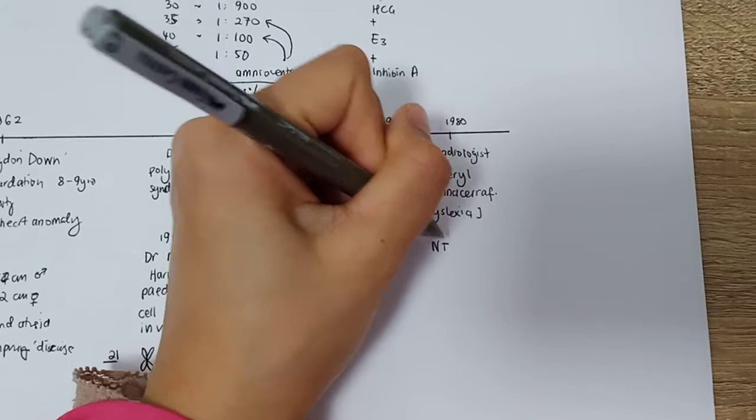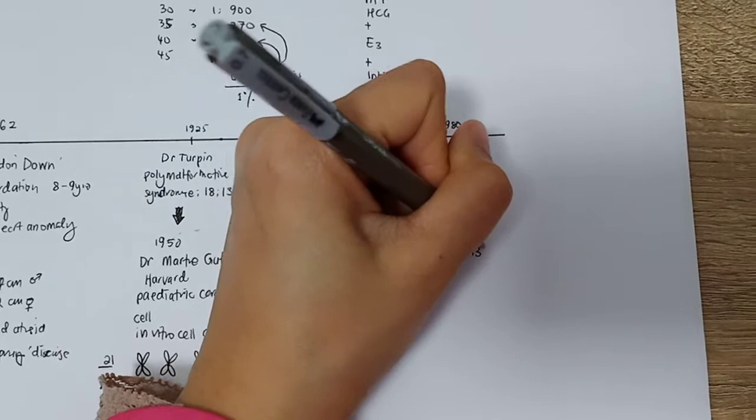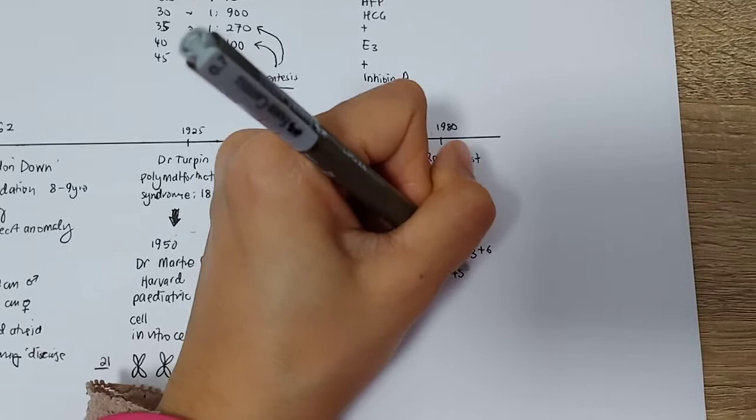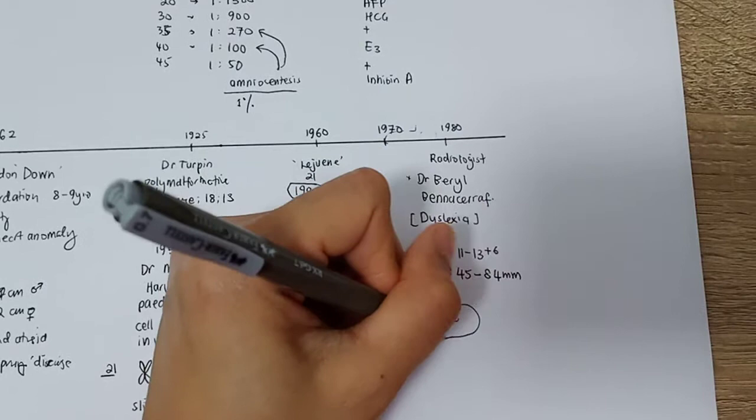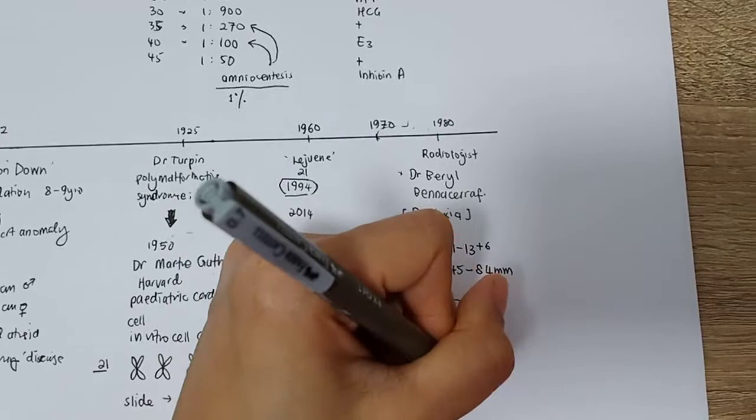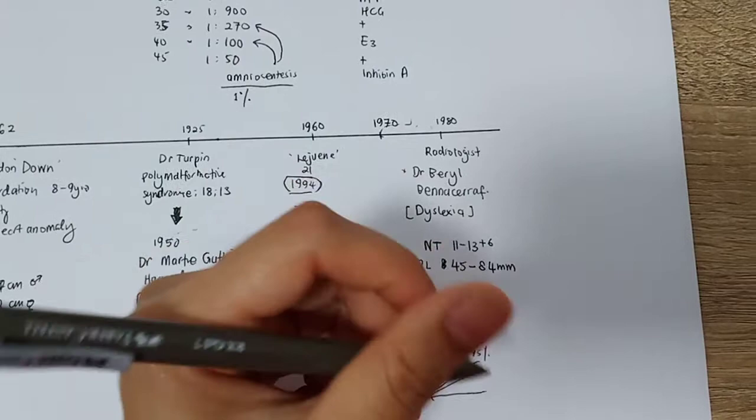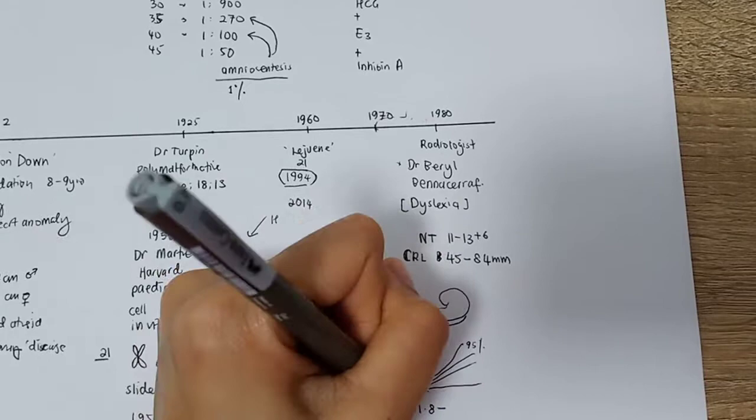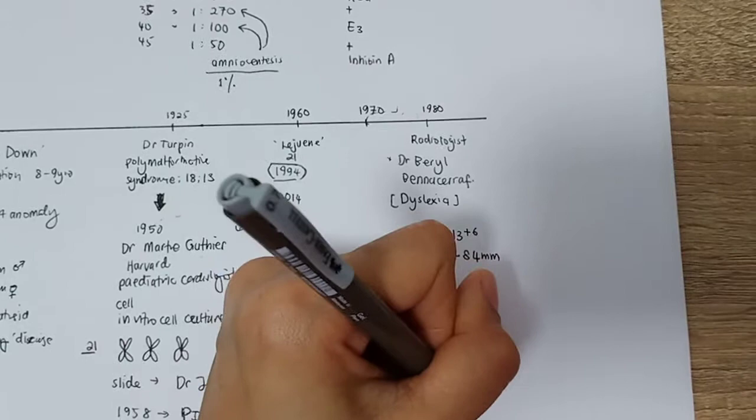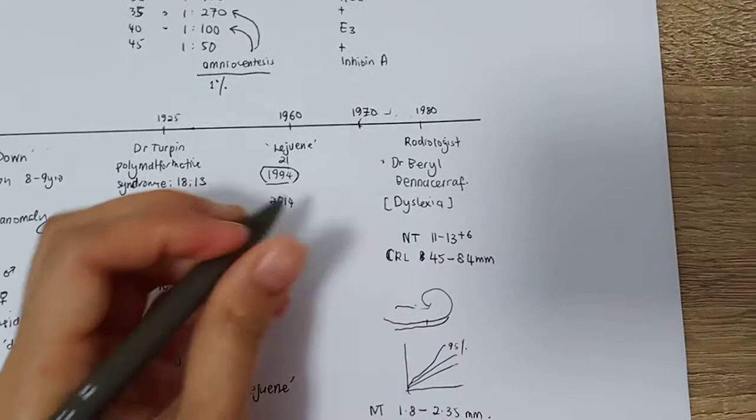She's the one who found the translucency that can be seen at 11 to 13 plus 6 days with the CRL around 45 to 84 millimeters. When she found out about the nuchal translucency and measured it, there is a graph that can tell us about the risk. If the graph is more than 95th centile, there is a high risk of fetal anomaly. Further investigations need to be done, which is amniocentesis or CVS.